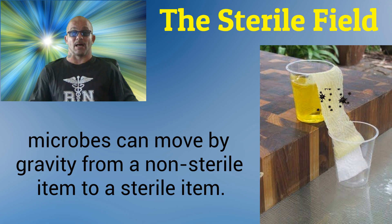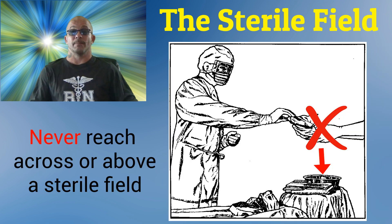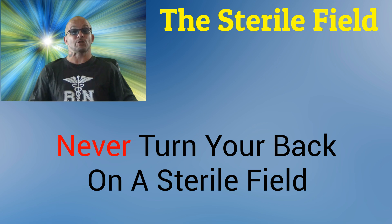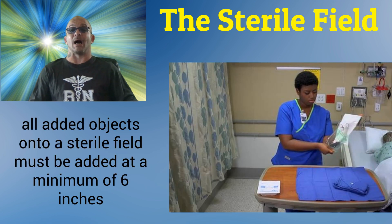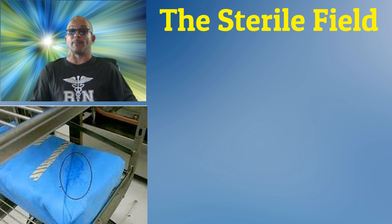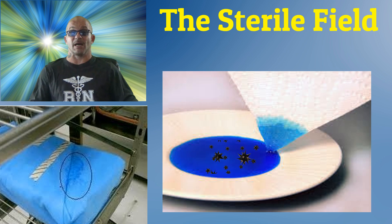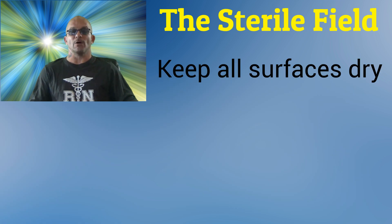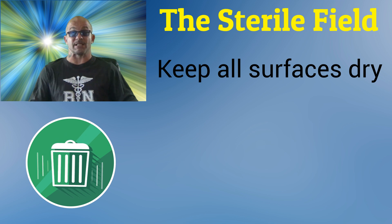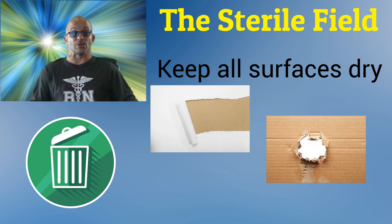We must recognize that microbes can move by gravity from a non-sterile item to a sterile item. This is why we must never reach across or above our sterile field, and we must never turn our back on a sterile field. All objects added onto a sterile field must be added at a minimum of six inches above the field. Any sterile non-waterproof wrapper that contacts moisture becomes non-sterile through a wicking action that allows microbes to travel rapidly to the sterile surface. Keep all surfaces dry and discard any sterile packages that are torn, punctured, or wet.